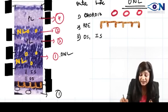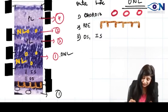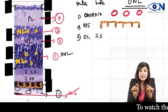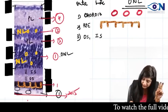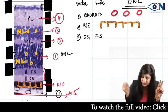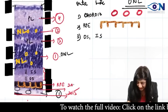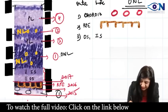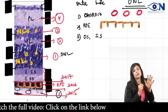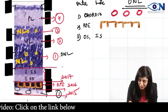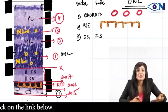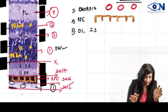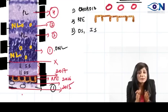In AIIMS 2015, the section was given showing the choriocapillaries, the RPE layer, and the layer of rods and cones. In 2016, the section still showed the RPE layer. But in 2017, the section was given showing only the outer segment and inner segment. If neither the RPE nor the choriocapillaries are visible, you cannot reliably determine which is the outer side — which is why this question has not been repeated after 2017.